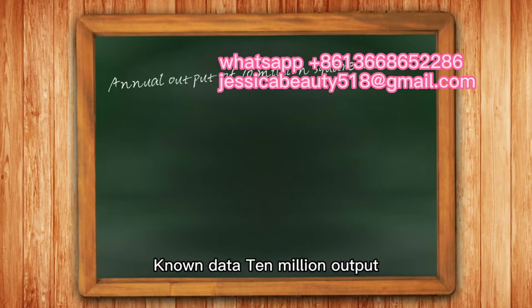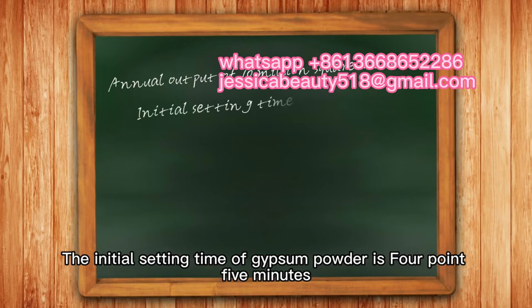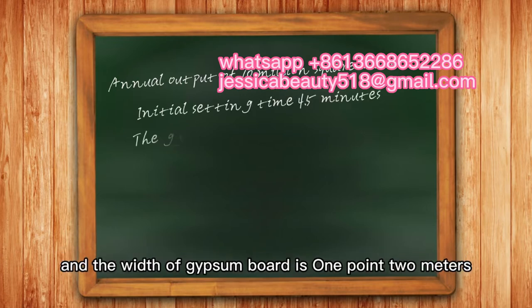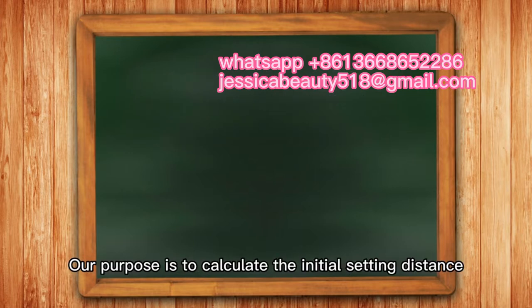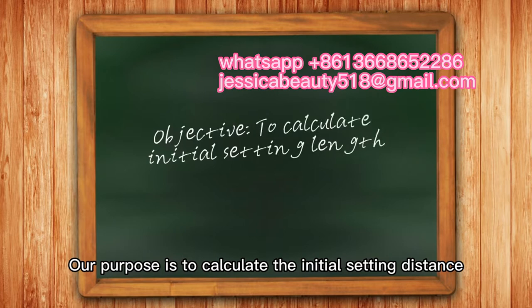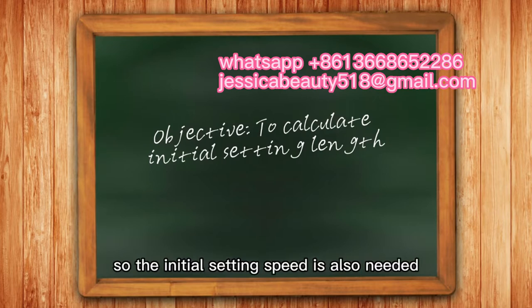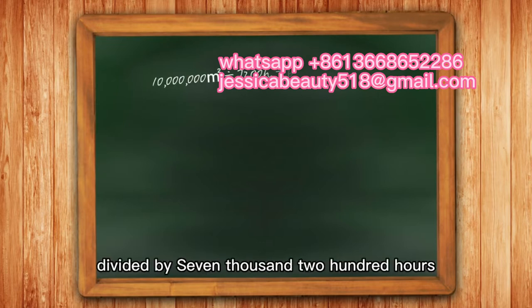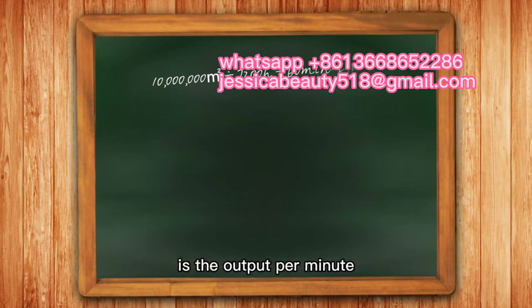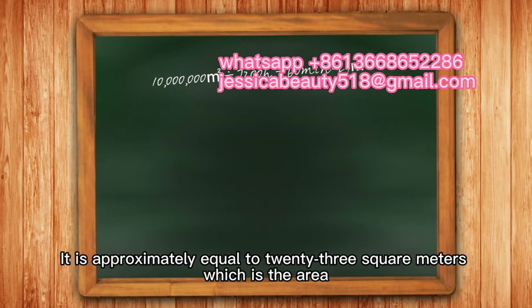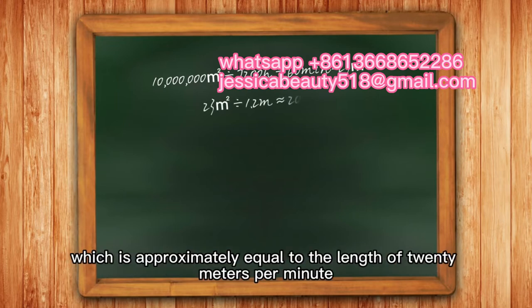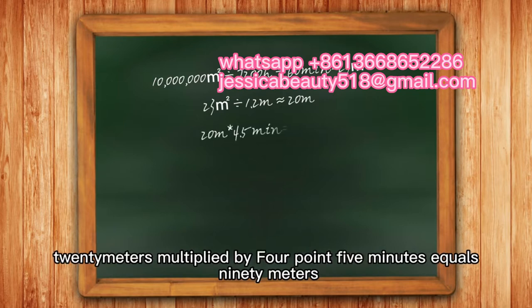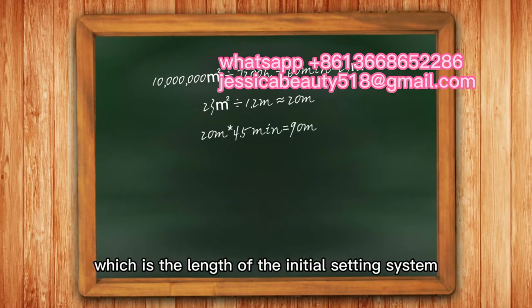For a 10 million square meter annual output, the initial setting time of gypsum powder is 4.5 minutes and the width of gypsum board is 1.2 meters. To calculate the initial setting distance, we first find the initial setting speed: annual output of 10 million square meters divided by 7,200 hours, divided by 60 minutes, gives approximately 23 square meters per minute. Dividing by the 1.2-meter width gives approximately 20 meters per minute. Multiplying 20 meters per minute by 4.5 minutes equals 90 meters — the length of the initial setting system.